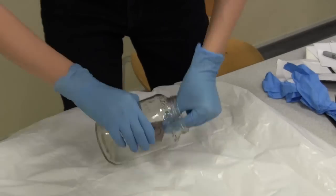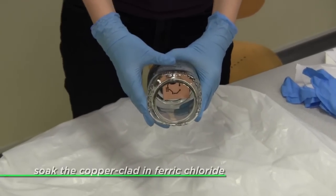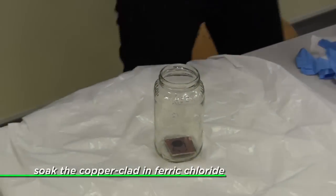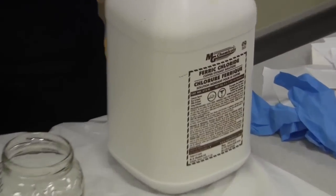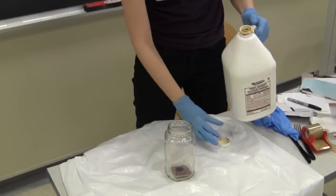Now, we're going to etch the board. We're going to use a chemical called ferric chloride, which you can buy online or at an electronics hobby store. Ferric chloride removes the copper that isn't covered by the toner.